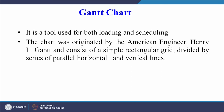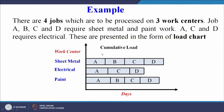The Gantt chart is a tool used for both loading and scheduling. It was originated by the American engineer Henry L. Gantt and consists of a simple rectangular grid divided by series of parallel horizontal and vertical lines. Looking at an example Gantt chart: the x-axis represents the time domain, the y-axis represents the activity or work center. There are four jobs to be processed on three work centers: sheet metal, electrical, and painting work centers.